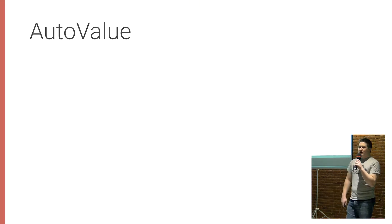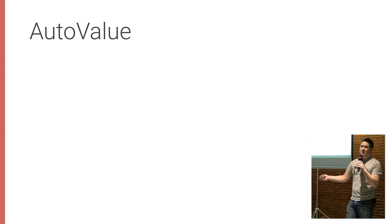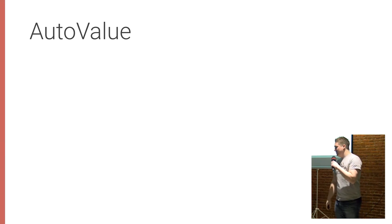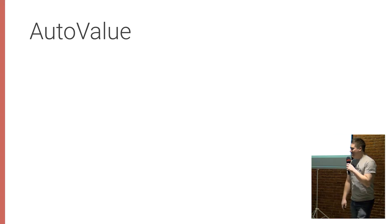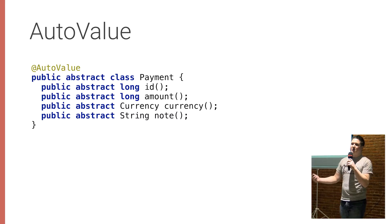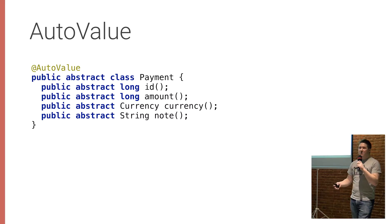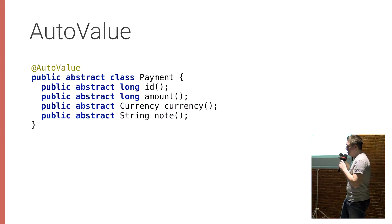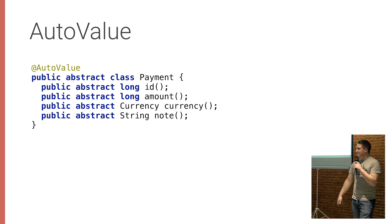AutoValue basically gives you something called value types in Java — something we'll hopefully get in the language itself in Java 10. But being stuck in the dark ages of Java 6-ish on Android, we need something else. AutoValue gives us a way to declaratively write a class which has properties, and that class also gets things like equals, hashCode, and toString. It's immutable, so we can use it like a value type — similar to primitives — where you can pass it around and never mutate it, getting all kinds of nice guarantees.